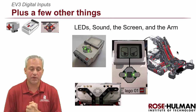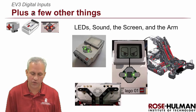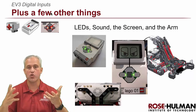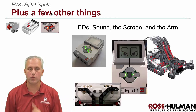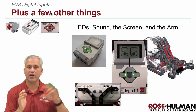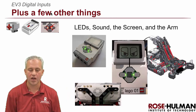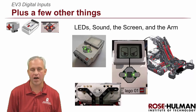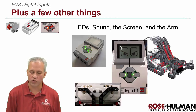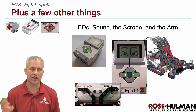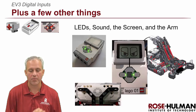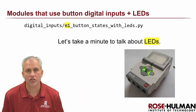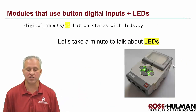Welcome back. We've been hitting digital inputs hard. The focus of this lecture is the unit structure: each module uses digital inputs to control something. M1 uses digital inputs to control LEDs, M2 to control sound, M3 to control the screen with angry eyes, and M4 and M5 are to make the arm go up and down.